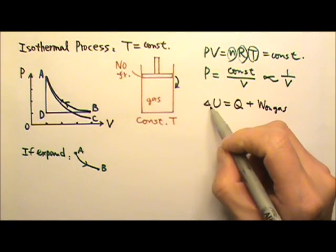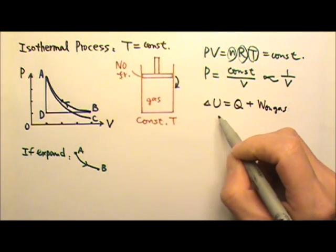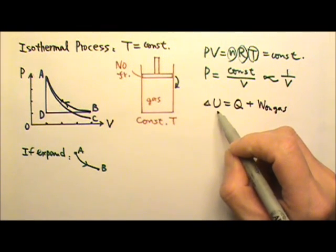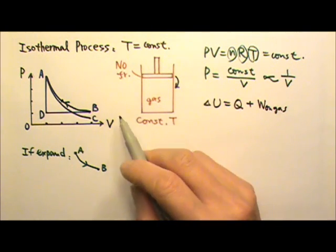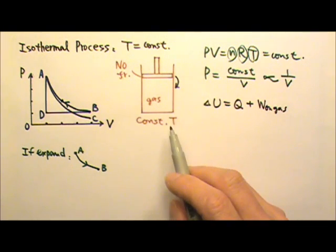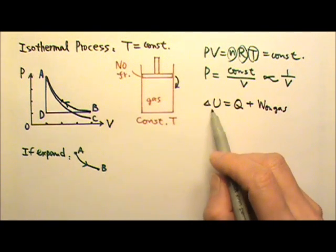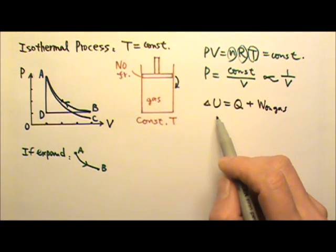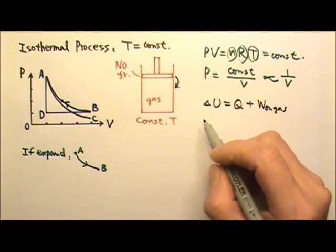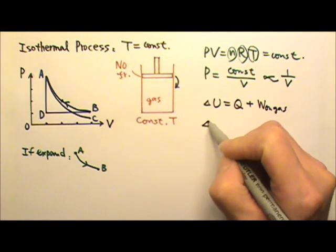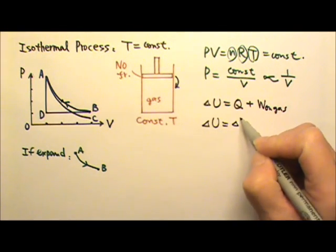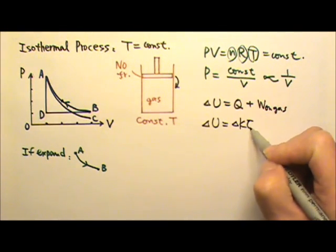The U here is the internal energy, which can include kinetic energy, chemical energy, etc. But for the processes we will be looking at in this course, the only kind of internal energy that will be changing is the kinetic energy. So for us, delta U is the change in kinetic energy only.